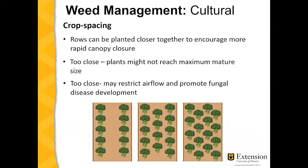Crop spacing is also an important tool for cultural weed control. You can see the image below of two rows of broccoli, three staggered rows, and four staggered rows. As you manipulate the amount of area between these crops, you can reduce weed pressure because the canopy will close between the crops and reduce the amount of sunlight that weeds have the chance to grow in.